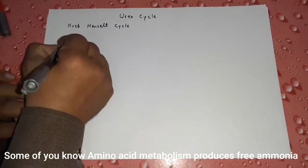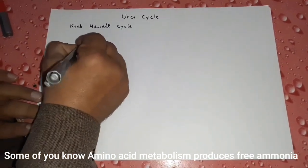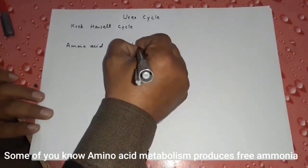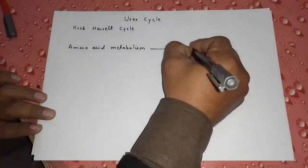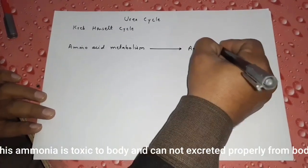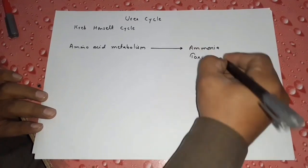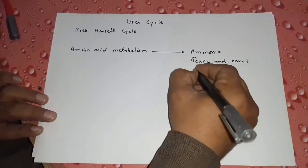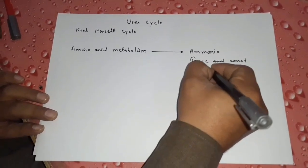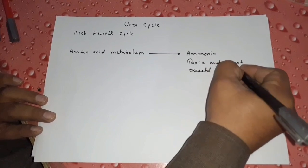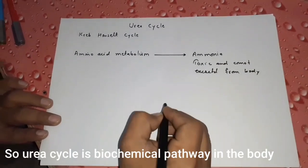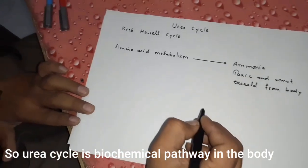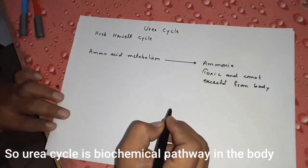Amino acid metabolism produces free ammonia. Ammonia is toxic and cannot be properly excreted from the body.